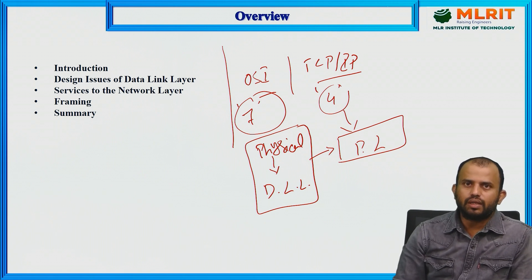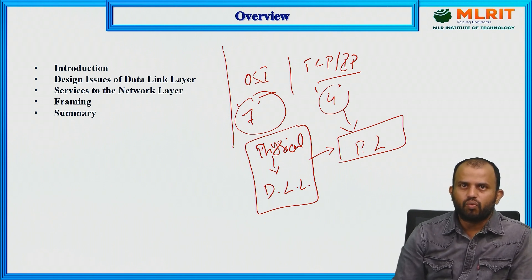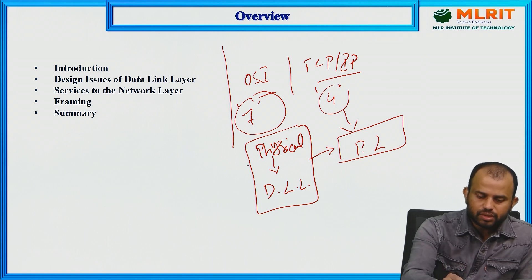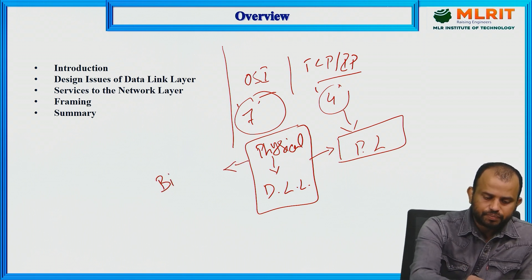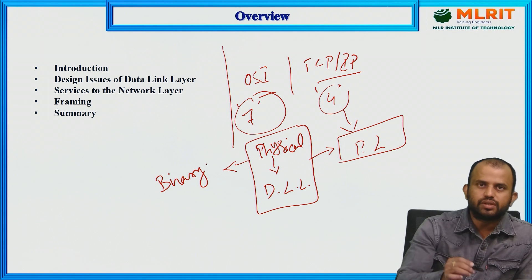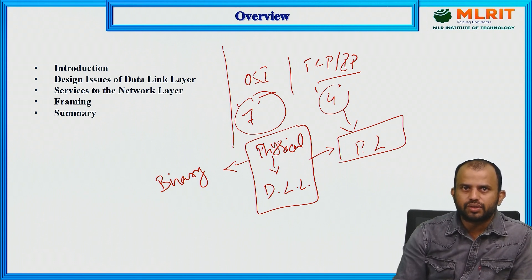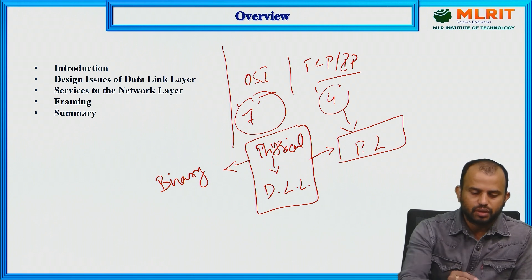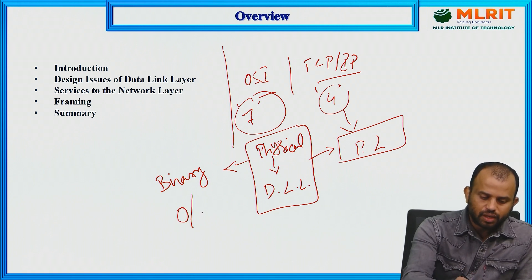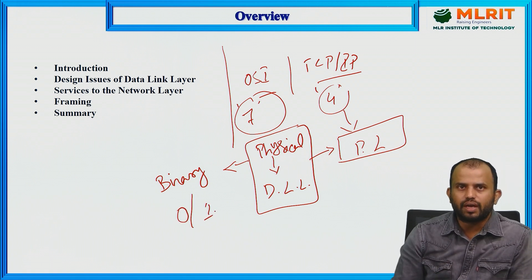While information is transmitting from one end to another, the information is transmitted in the form of binary. As we know, the information is transmitted through the physical layer, and the physical layer only accepts information in the form of binary — that is, a raw stream of bits, where 0 and 1 act as binary numbers.